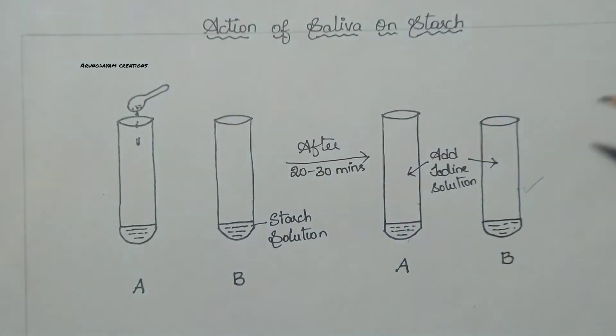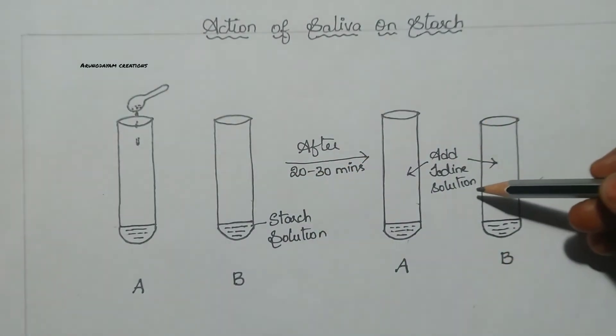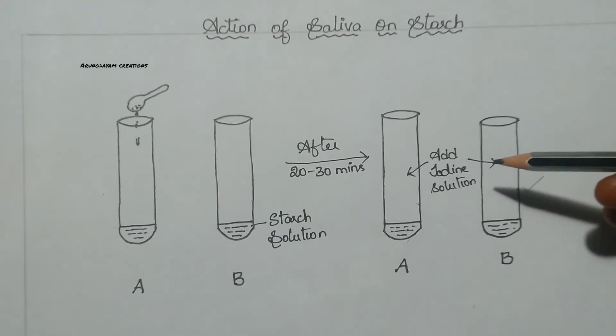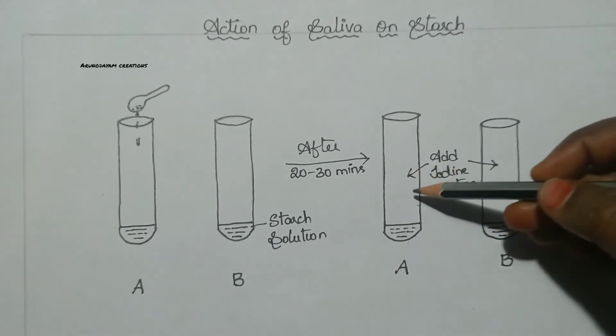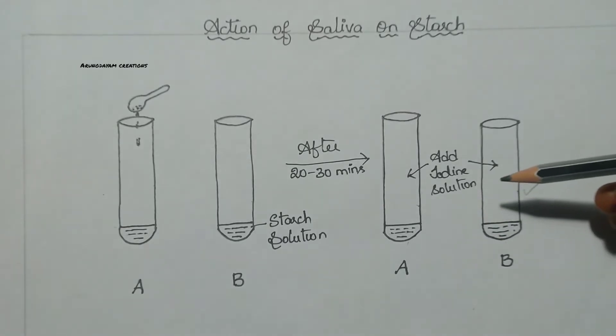Then after, we have to take iodine solution. Iodine solution is a reagent which is used to test the presence of starch or carbohydrates. So we have to add 2 or 3 drops of iodine solution to both these test tubes A and B. After some seconds or after some minutes, we can clearly see that some color change is taking place in test tube B. The solution in test tube B will turn into blue-black color indicating the presence of carbohydrates or starch in it.